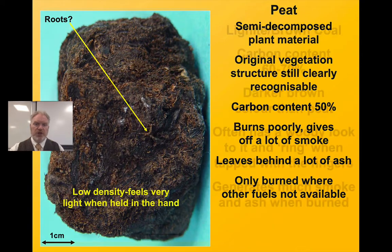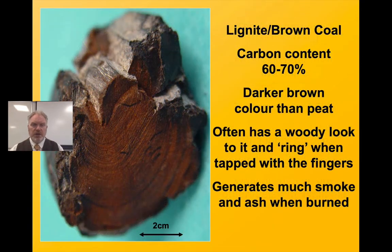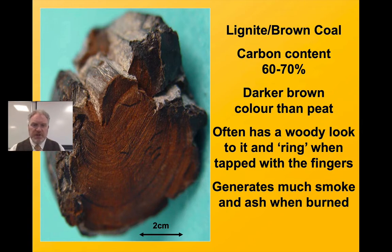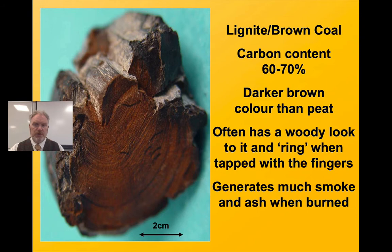With some more pressure and a bit of temperature, that peat will turn into lignite, or brown coal. We've got higher carbon content — it's a bit darker, a bit denser, a bit harder. But this is pretty terrible coal. There's a lot of smoke, a lot of pollution created from burning this, and a lot of ash left over after it burns. Generally, this isn't used as a fuel.